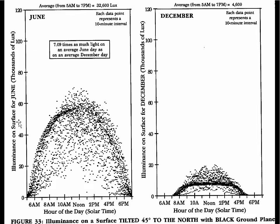Here is the daylighting data for that tilted north-facing aperture. We get lots of beam sunlight in June, and in December we get none whatsoever. The outlying data points represent times when there's a large bright white cloud in the northern sky, but the dense cluster represents the typical winter condition — not terribly bright, and not doing anything to offset the heating loads. During summertime when we have to cool the building, we have this fierce input of light and heat — the exact opposite of what we want from an aperture.